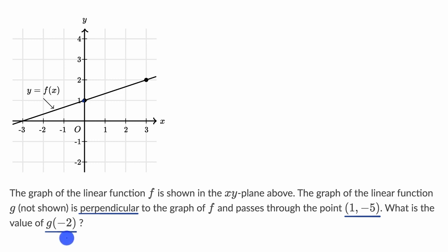Pause this video and see if you can work through this before we do this together. Alright, now one technique we can do is just try to figure out the equation of g. So g(x) is going to be in the form mx + b, the slope times x plus the y-intercept. First of all, let's think about what the slope is going to be. If g is perpendicular to f, that means g's slope is going to be the negative reciprocal of f's slope.